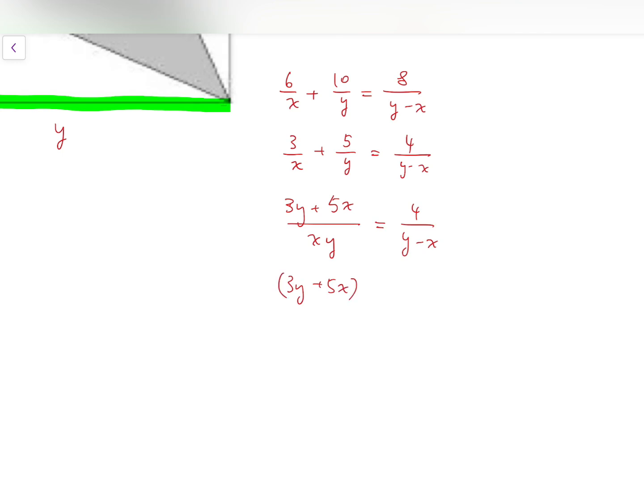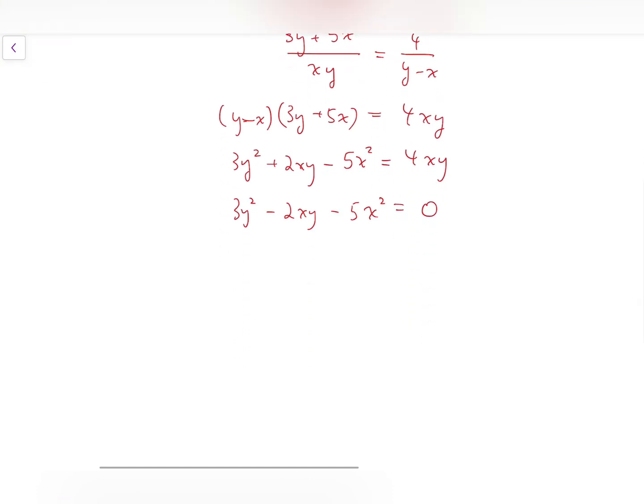Cross-multiplying, we have (y-x)(3y+5x) = 4xy. Expanding: 3y² + 2xy - 5x² = 4xy. Moving everything to one side, we have 3y² - 2xy - 5x² = 0.